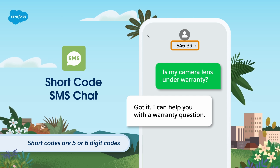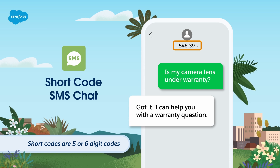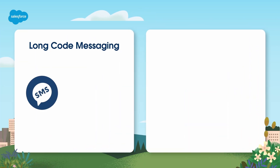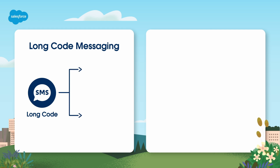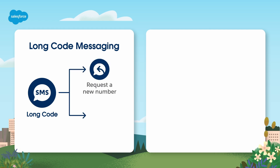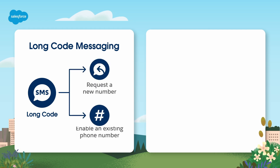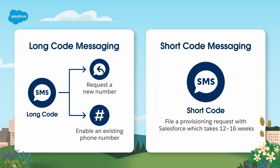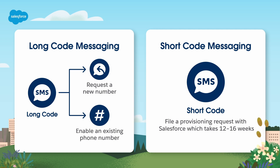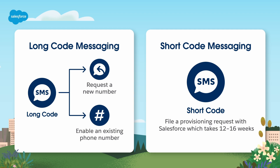Short codes are five or six digit codes that can be branded so they are recognizable and easily remembered. Be aware that short codes are not available in every country. To set up a long code messaging channel, you'll need to file a support case and either request a new number or authorize Salesforce to enable an existing phone number for your channel. To set up a short code messaging channel, you'll need to file a provisioning request with Salesforce, which takes 12 to 16 weeks. Be sure to consult Salesforce Help for more guidance on setting up SMS messaging channels.